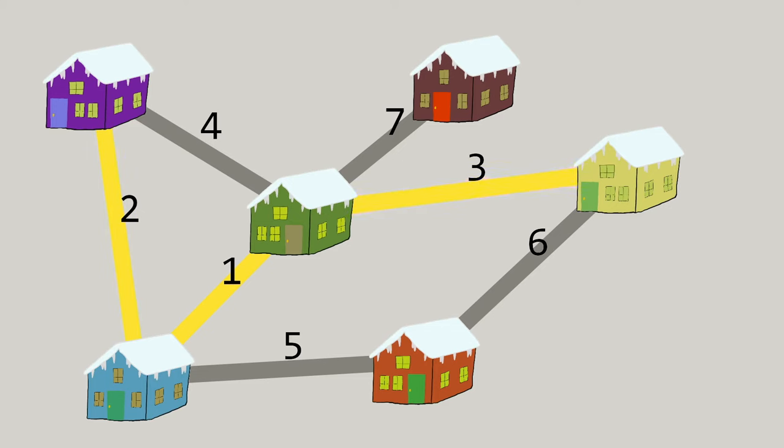But eventually, if we keep going through the roads in order by the number of volunteers needed to clear it, we'll likely come across a road that connects two houses that already have a path to each other. And here's a key point. If we come across a road that connects two houses that are already connected via some other path, then we definitely shouldn't bother clearing that road.